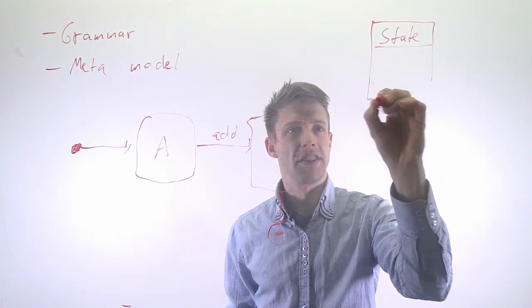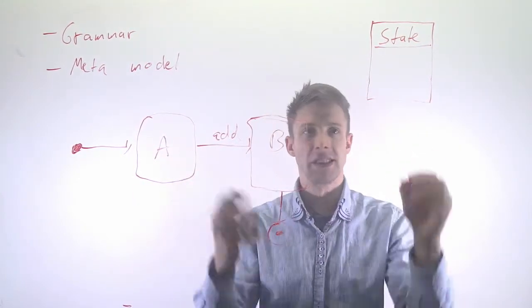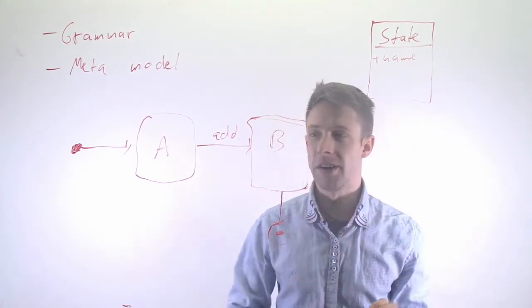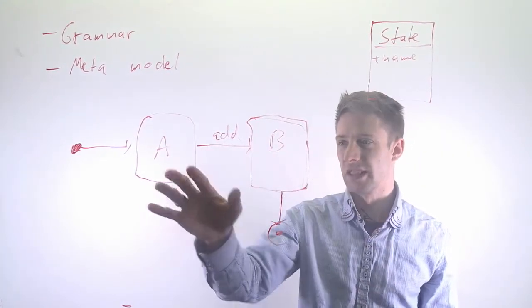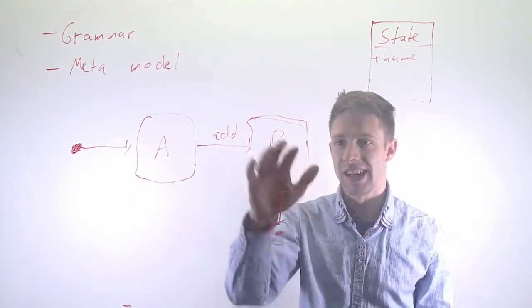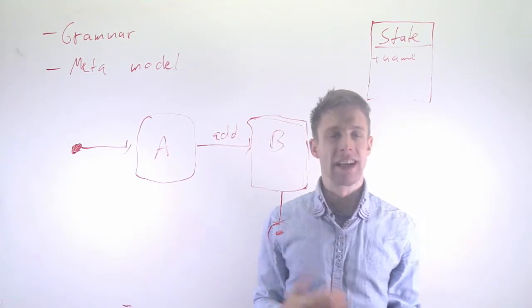And there are of course a number of different attributes we can set here, we have for example a state name, I'll skip the parameters for now. There might be other things, for example in a real UML state machine diagram, you have the actions inside the do, entry, exit actions, we'll skip them here.